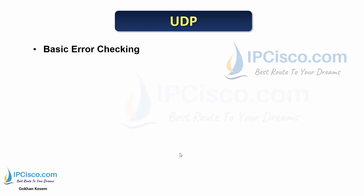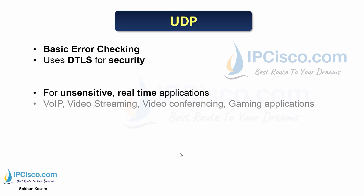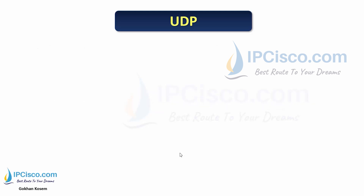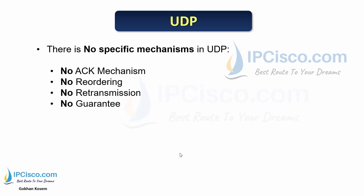UDP has basic error checking. DTLS — Datagram Transport Layer Security — is used for security purposes with UDP. We use UDP for non-sensitive traffic and for real-time traffic that is not affected by data loss. Voice over IP, video streaming, video conferencing, and gaming are the types of traffic that use UDP. In UDP, there is no ACK mechanism, no reordering, no retransmission, no guarantee, no flow control, and no window scaling.